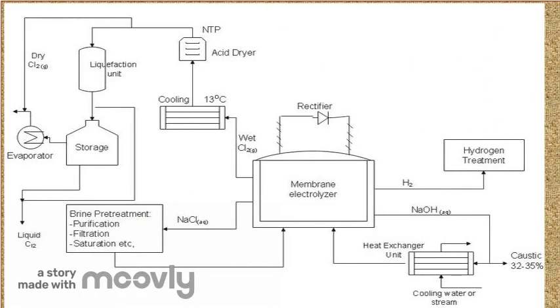The figure shows the process flow diagram of the chloralkali process using a membrane cell. The process begins with pre-treatment of brine to remove impurities and saturate the salt solution. Pre-treated brine with dilute sodium hydroxide is then processed in the membrane cell to produce chlorine and hydrogen gas.